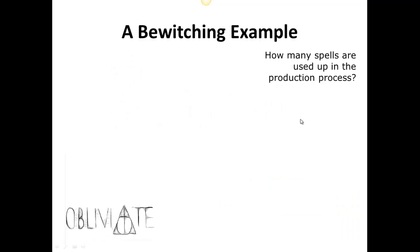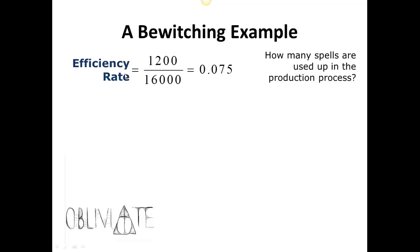For the first question — how many spales are used up — we look at the efficiency rate. We have 1,200 spales used up in the production of 16,000, which gives a rate of 0.075. So 0.075 of a spale is used up to produce one spale. That's our efficiency rate — how much we use to make one spale. We can express it as the fraction 1,200 per 16,000, or as the decimal 0.075 per one spale produced.